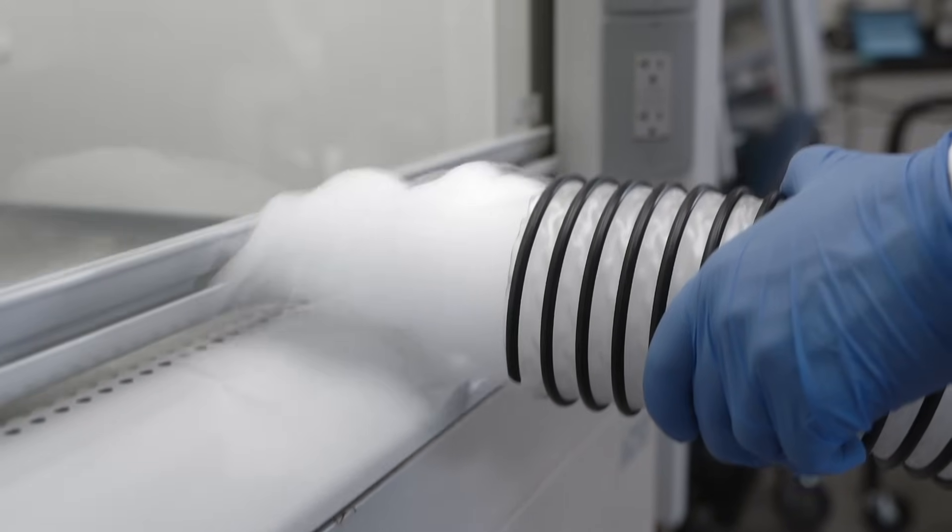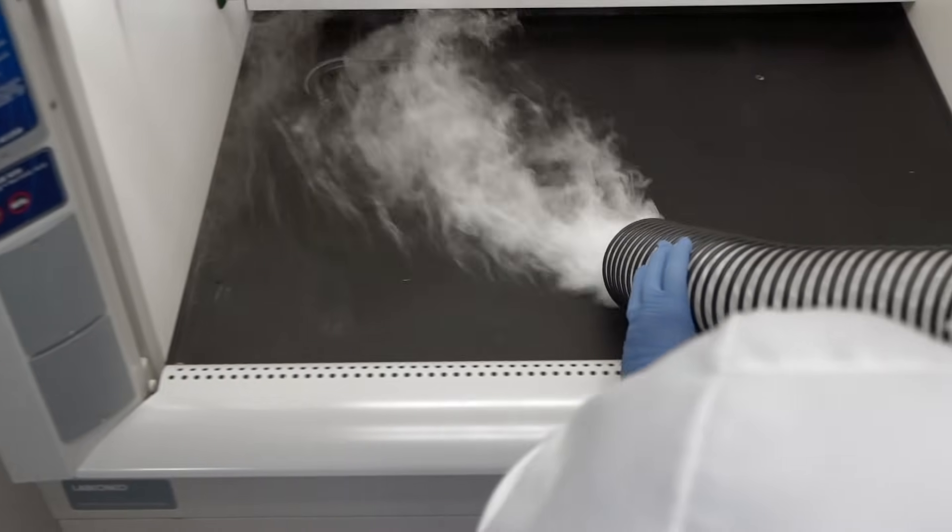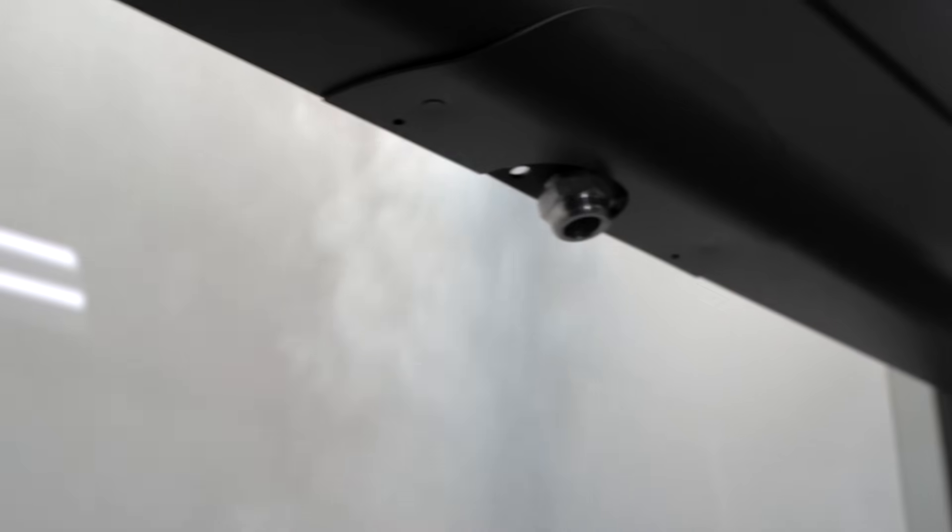Bypass hoods are designed to minimize fluctuations in face velocity as the sash is lowered or raised. Air enters the hood through openings along the top of the hood and underneath the airfoil, even when the sash is in the fully closed position.